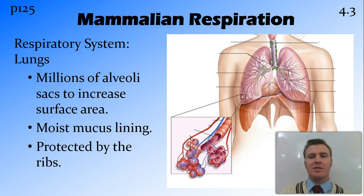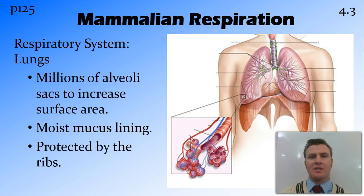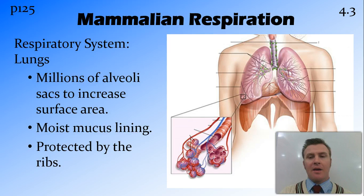In mammals, the respiratory system consists of the lungs, as well as a few pipes to get the air into the lungs, but the main part of the system is the lungs. The lungs have millions of alveoli sacs in them, which increases the surface area — in fact, if you were to open up all those alveoli sacs and flatten them out, it would be about the size of two tennis courts. They have a moist mucus lining so that gas dissolves into that mucus before diffusing across the lung wall into the blood. They also have protection from the ribs.